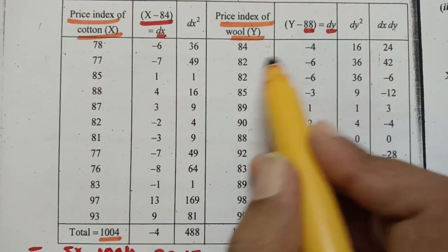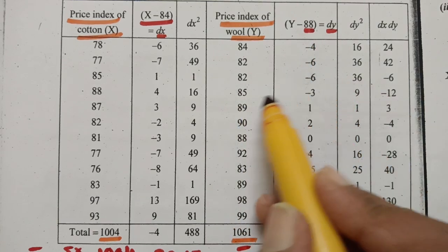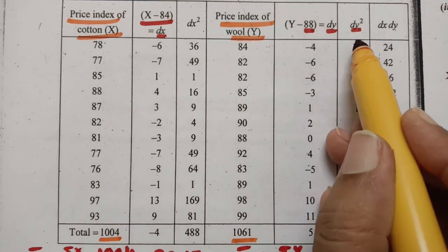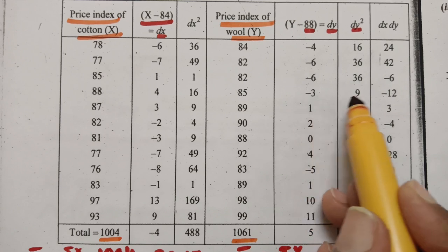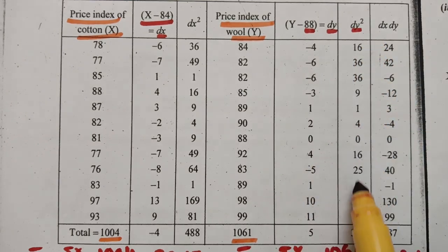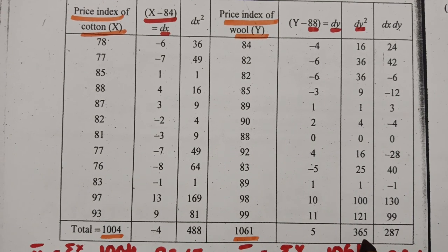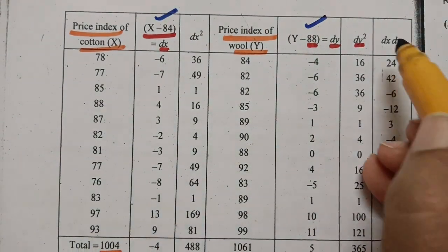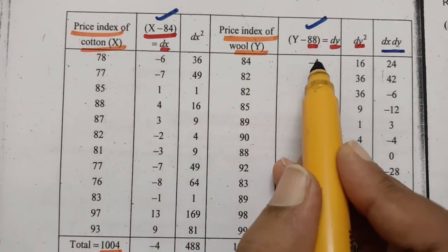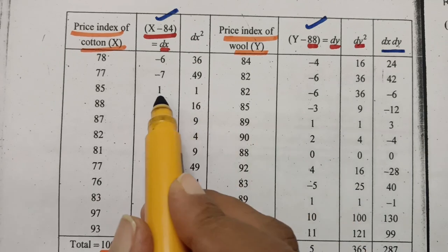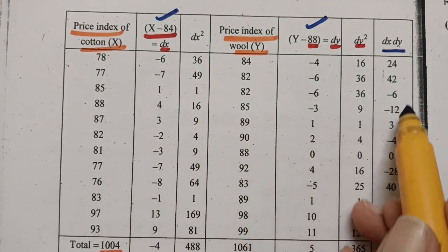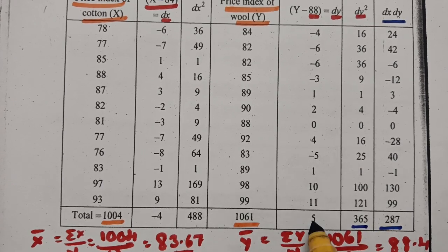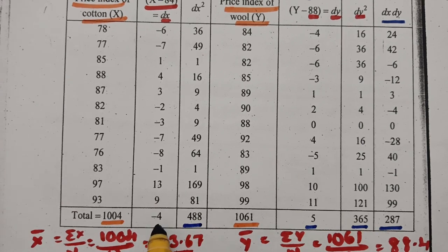We compute dy² for each value: (−4)² = 16, (−6)² = 36, (−6)² = 36, (−3)² = 9, 1² = 1, 2² = 4, and so on. Next we compute the product dx·dy: (−6)(−4) = 24, (−7)(−6) = 42, (1)(−6) = −6, (4)(−3) = −12, and so on. After summing all columns we get Σdx·dy, Σdy², Σdx², Σdy, and Σdx.